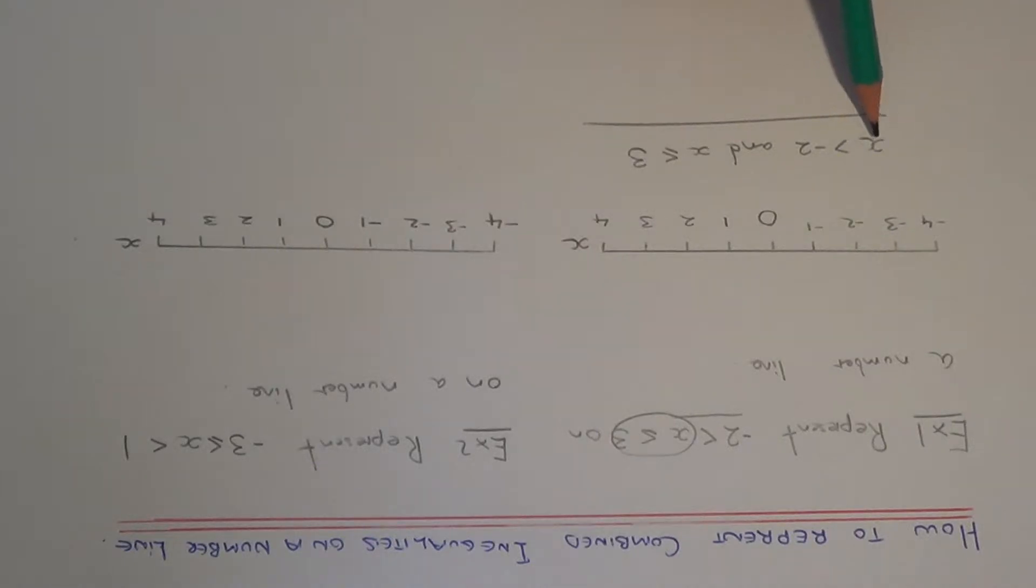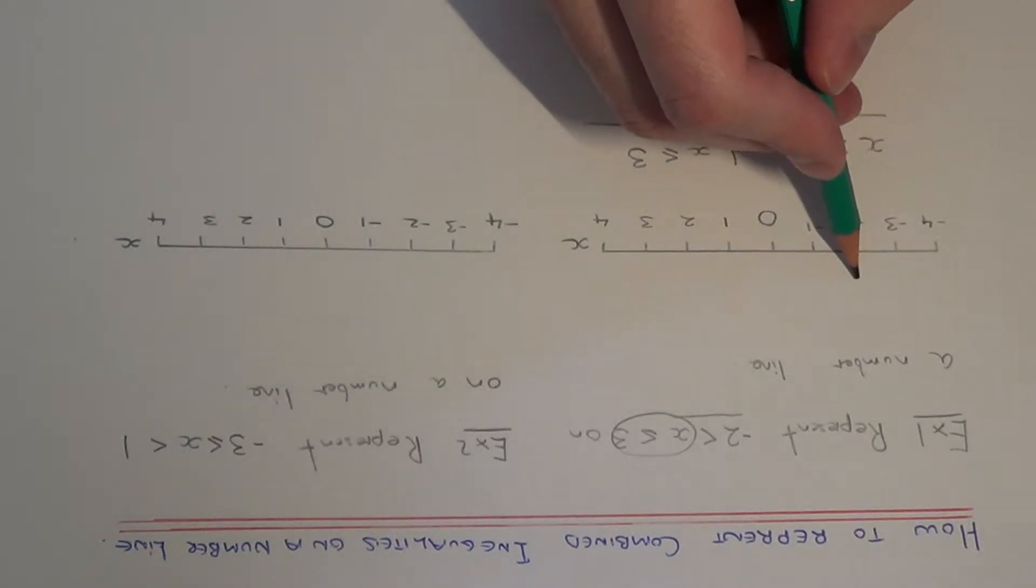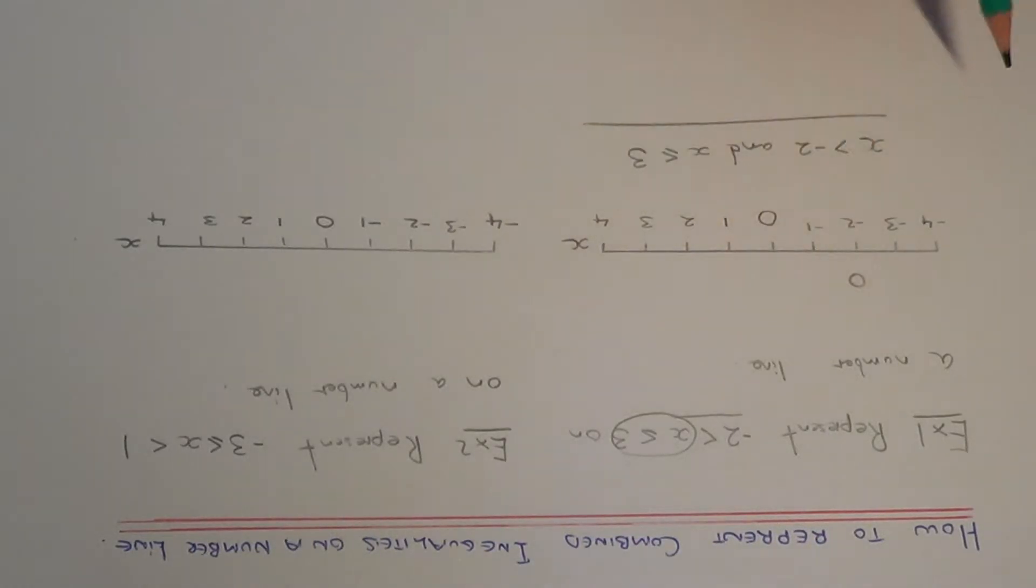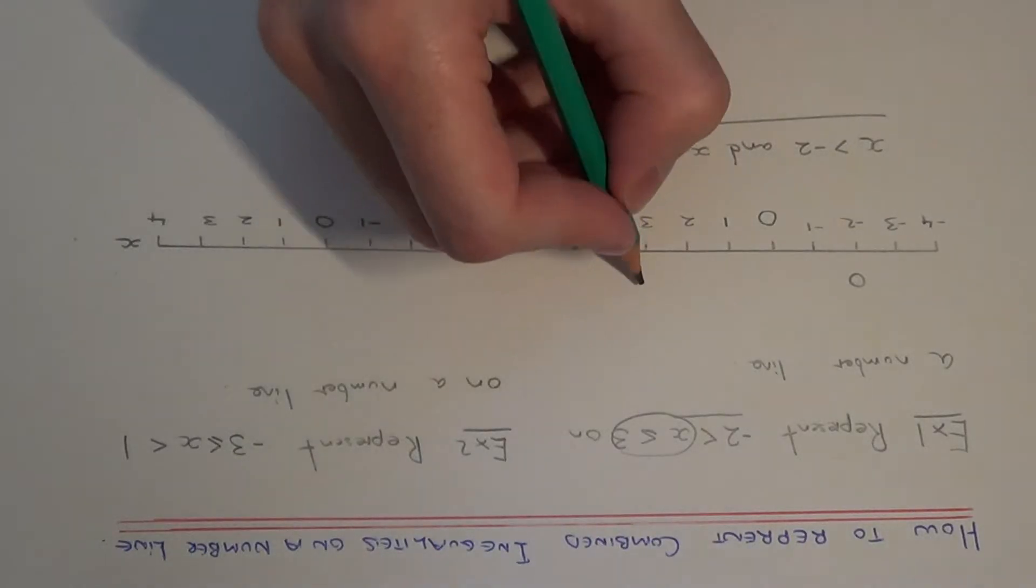First of all then go to minus 2 on your number line. For x is more than minus 2 you need to do a circle which isn't coloured in. And also go to 3 on your number line. This time it's less than or equal to, so we need to colour in the circle because it's equal to 3 as well.